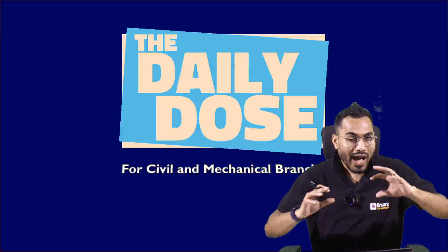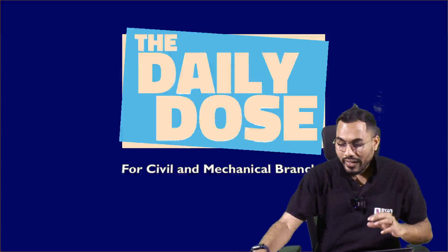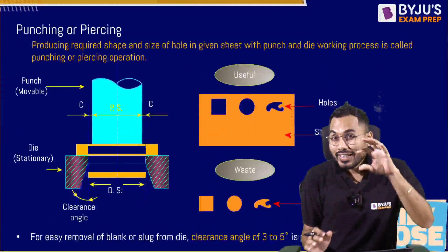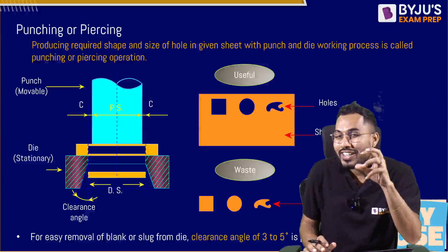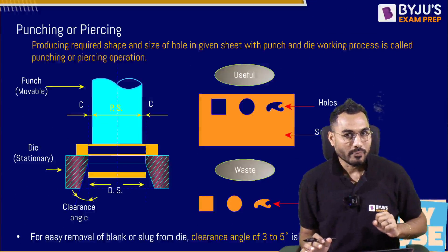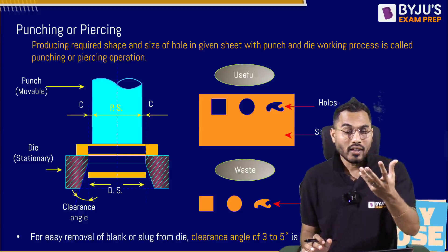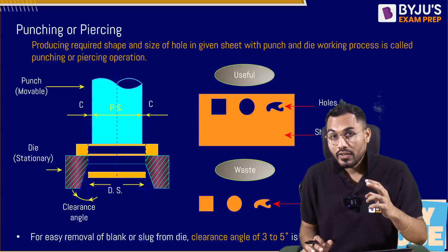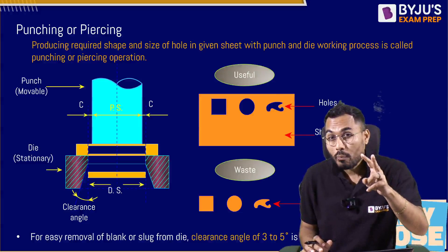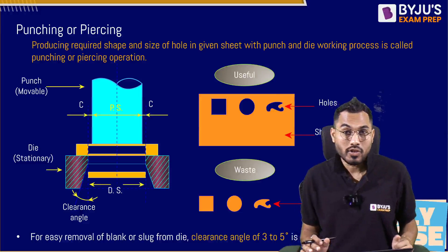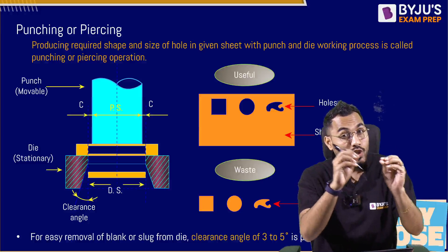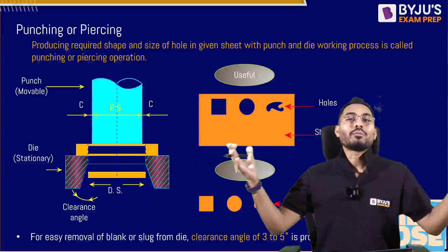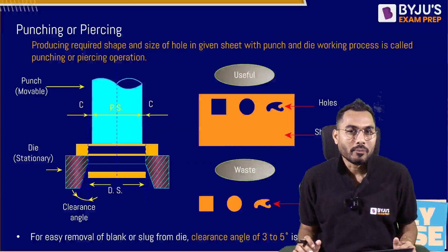I brought you a very important topic of sheet metal operation: designing punch and die dimensions. Whenever we talk about sheet metal operations, there are two operations that come into the picture. One is called punching or piercing operation, and the second is called blanking operation.